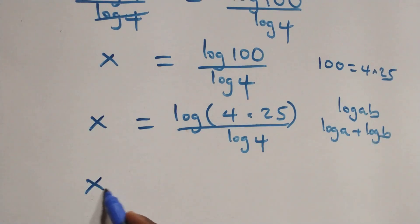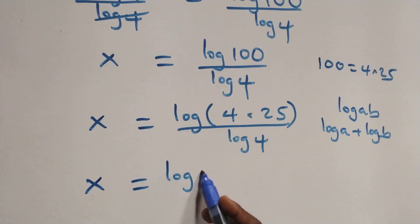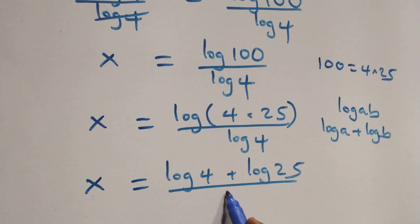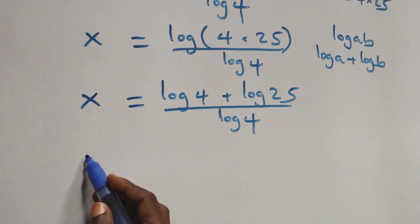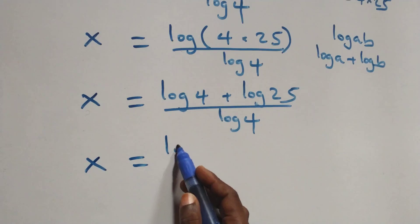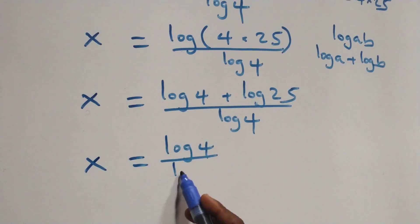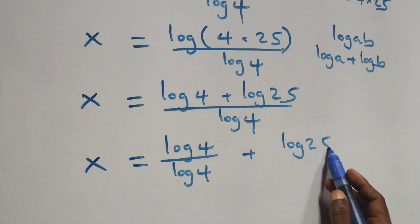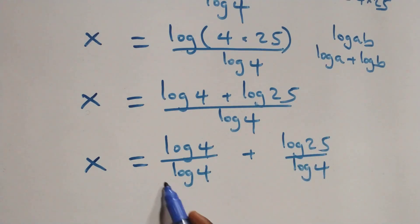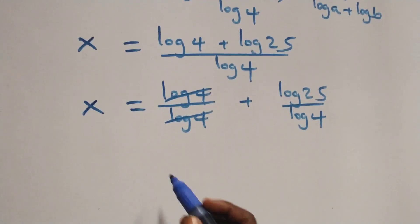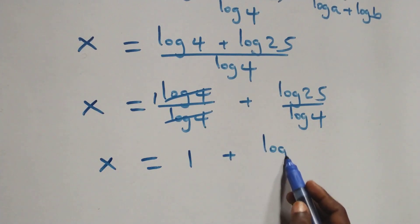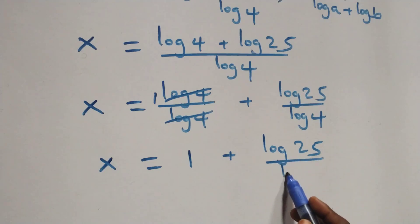So we have x equals (log 4 plus log 25) over log 4. We separate this into two fractions: x equals log 4 over log 4 plus log 25 over log 4. The log 4 terms cancel, leaving 1, which implies x equals 1 plus log 25 over log 4.